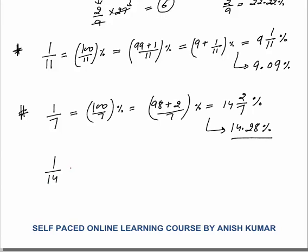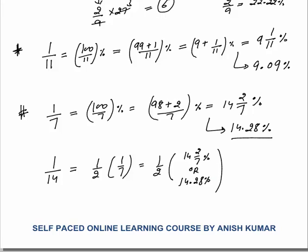One by 14 is half of 1 by 7. Half of 14 and 2/7 percent gives 7 and 1/7 percent, or 7.14 percent. So you must know all these fractions — they will really help you solve DI and Quant questions faster. Remember: 1 by 14 is 7.14 percent, and 7.14 percent means 1 by 14. Please memorize all these fraction-to-percentage values. In the next lesson I will ask questions on these. Thank you.